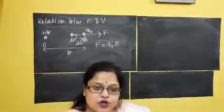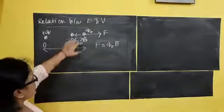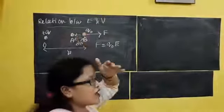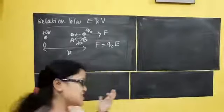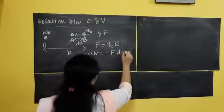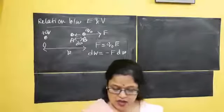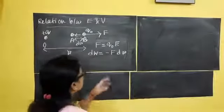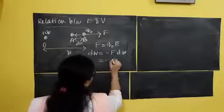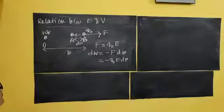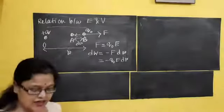Now, to move the charge Q0 from B to A, I need to do some work done, just like in potential. So that work done will be dW = –F·dR, with a negative sign because the force is a repulsion. In place of F, I can put Q0·E, so dW = –Q0·E·dR. My main purpose is to relate electric field and potential.